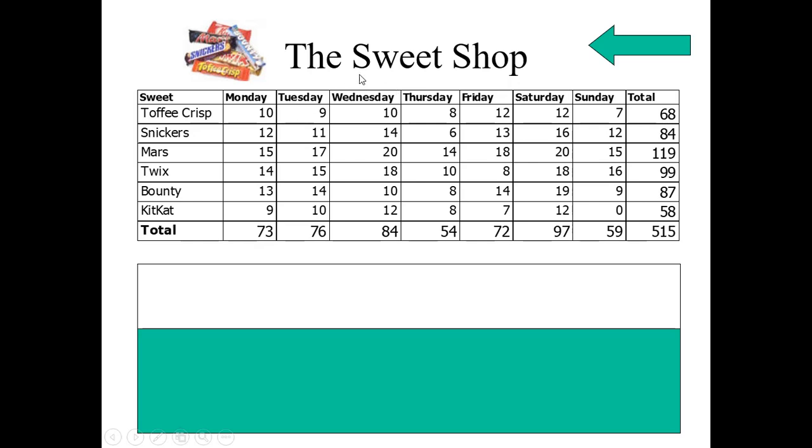Let us come to one by one. Here one data is given of the sweet shop. The sweet shop contains different items like Toffee, Snickers, Mars, Twix, Bounty and Kit Kat. All these are selling the number of items on Monday and Tuesday and like this in every week. This is the total of that items and this the below one total of the on particular day.